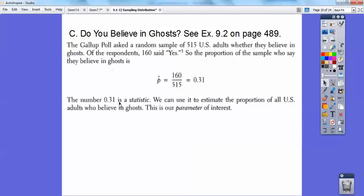The number 0.31 is a statistic, and we can use it to estimate the proportion of all U.S. adults who believe in ghosts. And all U.S. adults who believe in ghosts would be our parameter of interest.